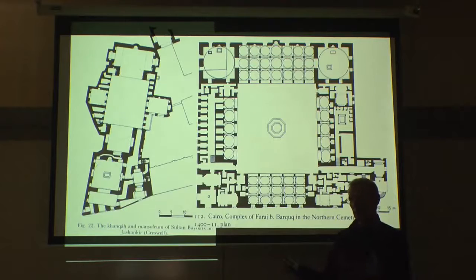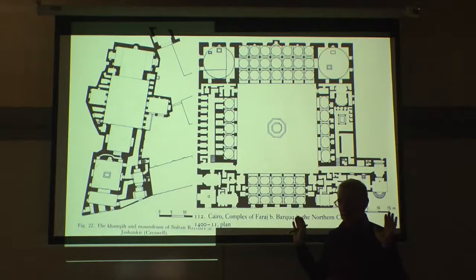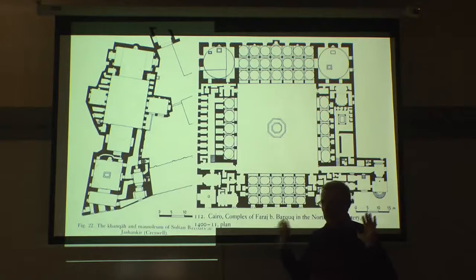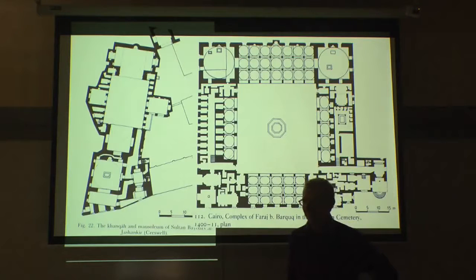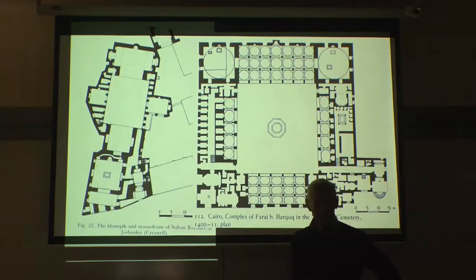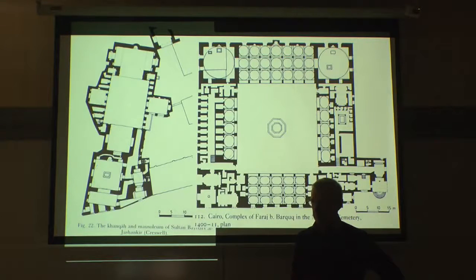Something I didn't point out is that this space and this space were actually a new feature coming about this time — a Sabeel-Maktab. A Maktab is an elementary school for orphans to learn the Quran, and the Sabeel is the water dispensary. That becomes a standard feature of later architecture.